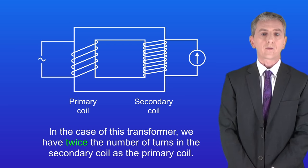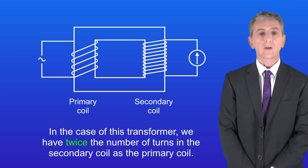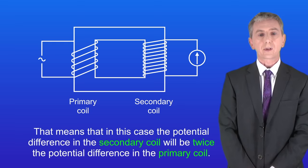In the case of this transformer, we've got twice the number of turns in the secondary coil as the primary coil. That means the potential difference in the secondary coil will be twice the potential difference in the primary coil.